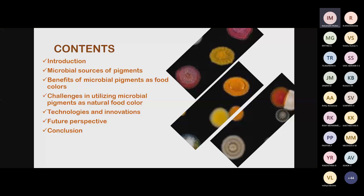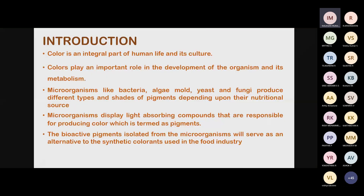In today's session, we will cover what microbial pigments are, what their sources are, what the benefits are, why they are not yet more widely explored by researchers, and what technologies are currently available. Initially, when we talk about pigments, they are basically colors — which can come from synthetic or natural sources. Natural colors can be extracted from plants, flowers, or insects. Color is an integral part of human life and culture. With colors, you can identify if a plant or animal is toxic or not.